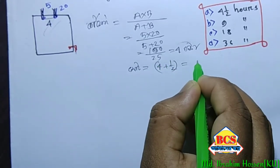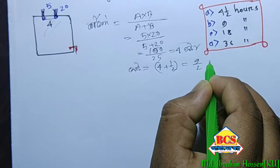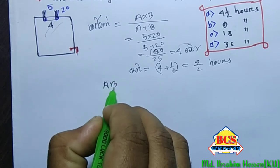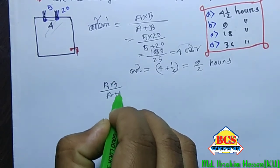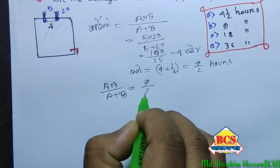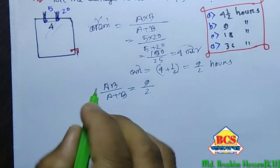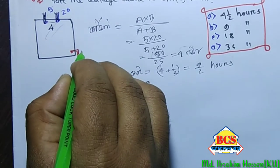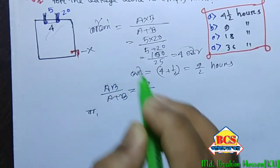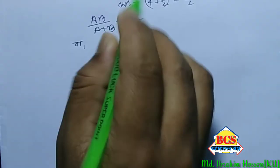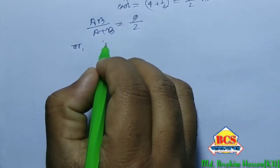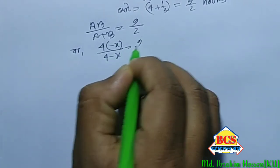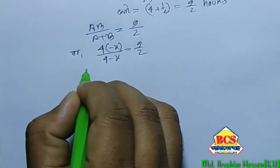Using the formula A times B divided by A plus B for combined work rate. We need to account for the extra time. Setting up the equation: 4 or 2 minus x, working with fractions 9 by 2.